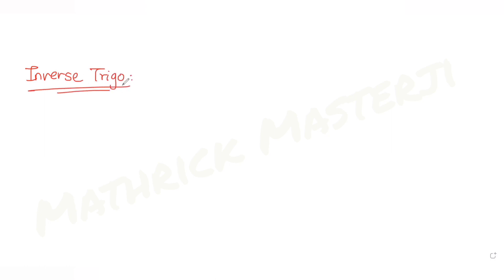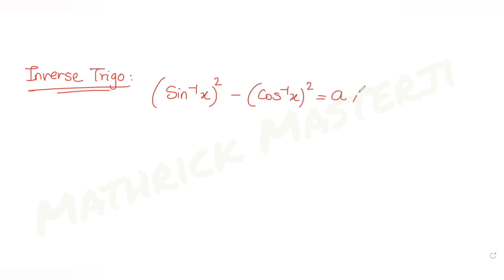Hi guys, I hope you are all doing well. Today's question is from the topic of inverse trigonometric functions. The question tells us that the expression (sin⁻¹x)² minus (cos⁻¹x)² is equal to a, and further it tells us x is between 0 and 1, and a is not equal to 0.